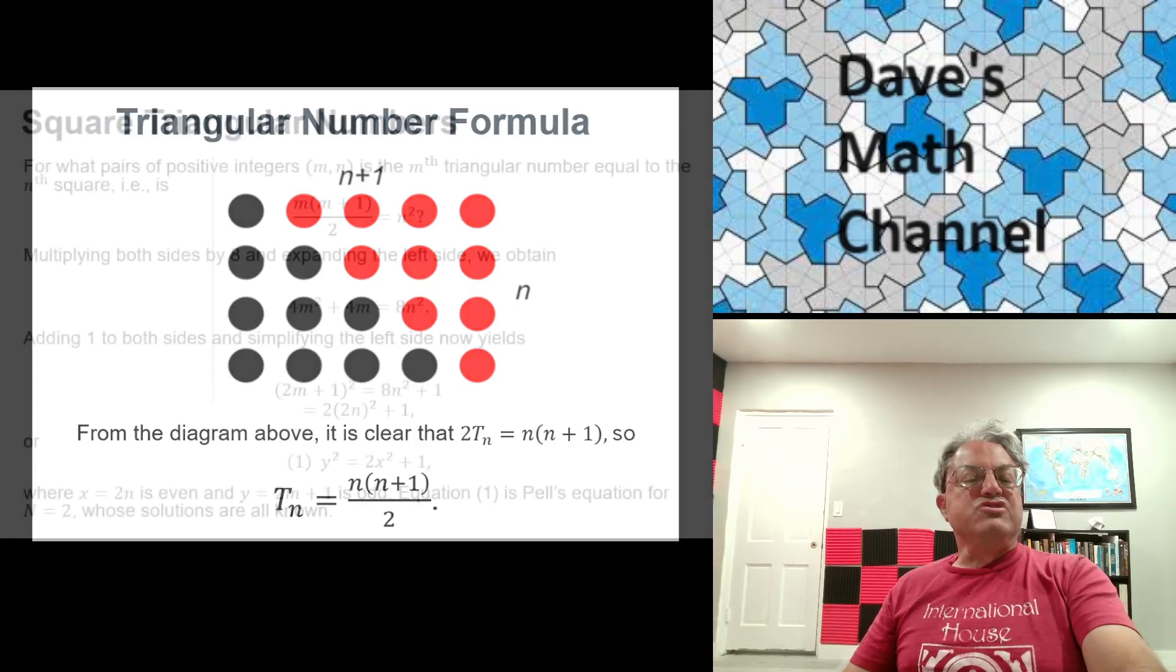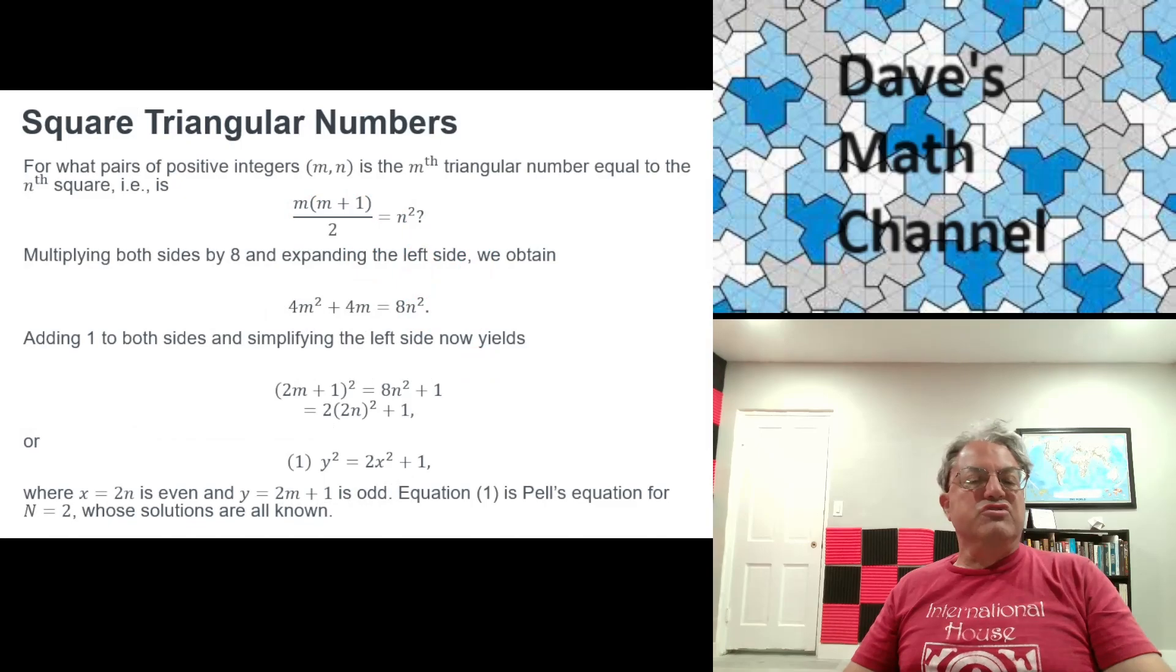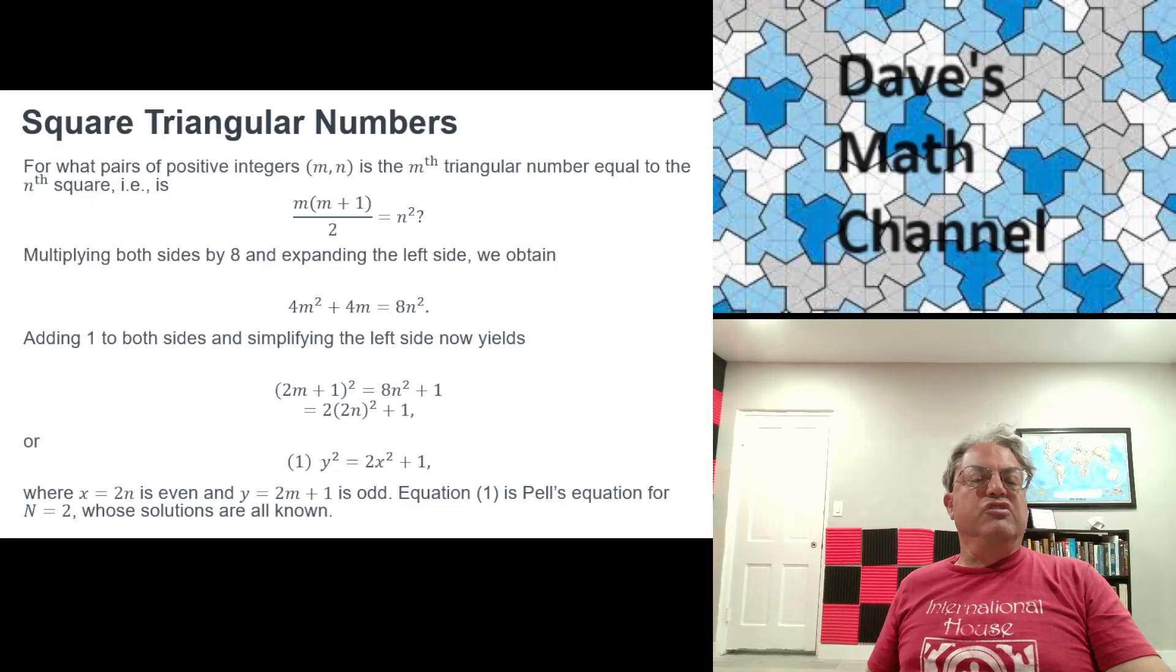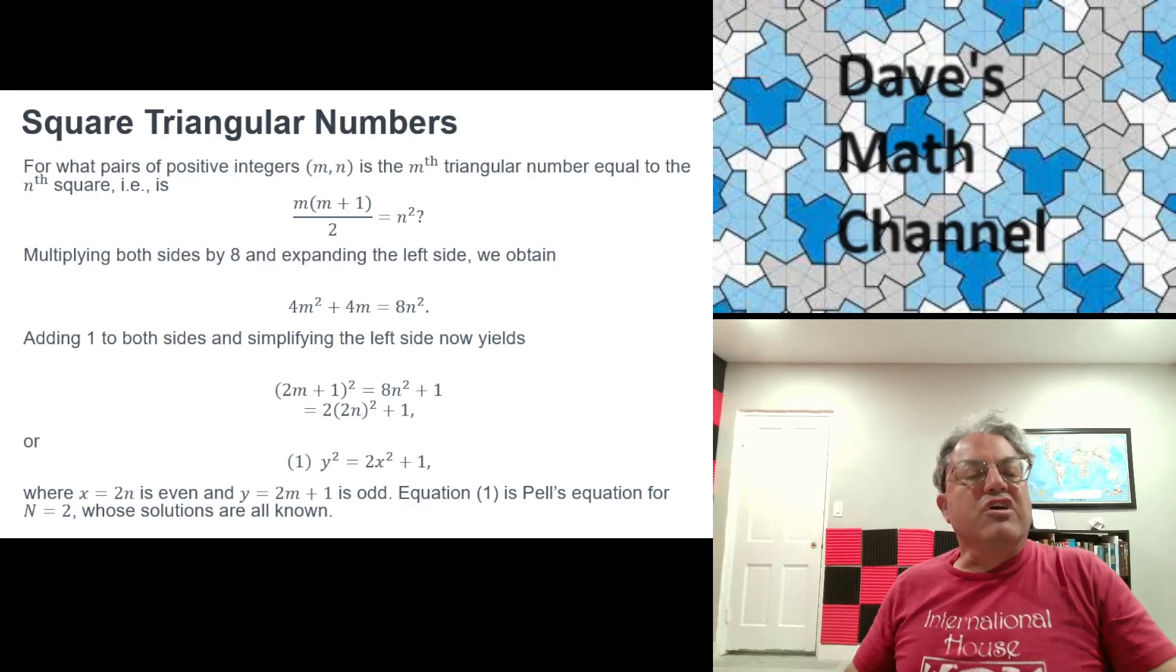So now we want to know what numbers are both square and triangular. We have this Diophantine equation here. We want the mth triangular number to equal the nth square. In other words, we want m times m plus 1 over 2 to equal n squared for some pair of positive integers m and n. How do we do that?